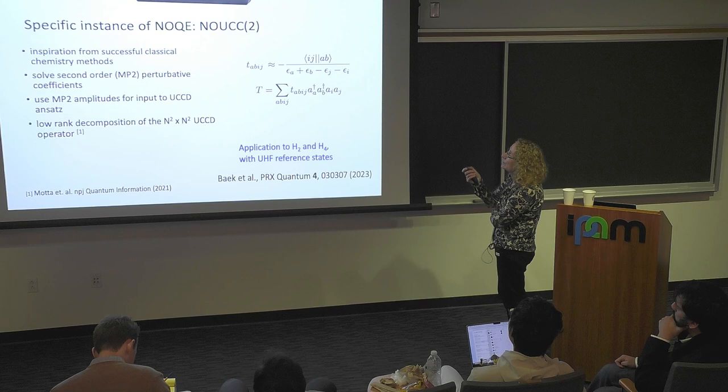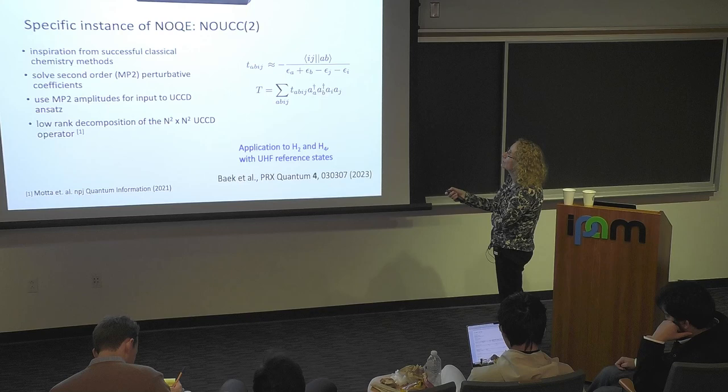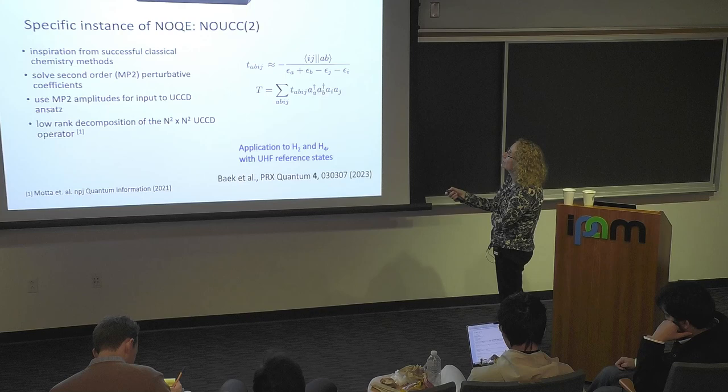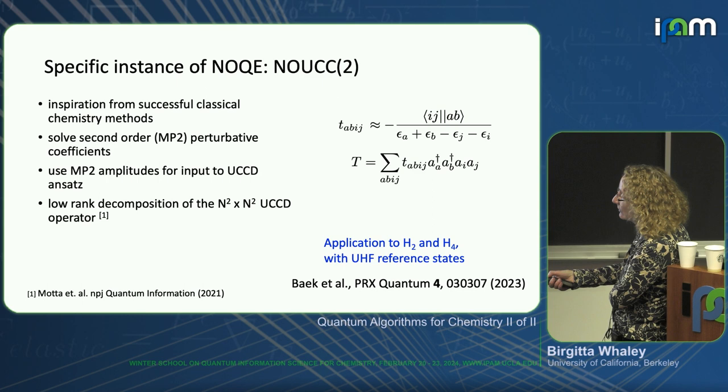Here's a specific example where we input coefficients from a second-order perturbative classical quantum chemistry calculation, with this expression using standard integrals and Hartree-Fock energies. We make a low-rank decomposition of this UCD operator — work due to Mario Motta and co-workers at IBM — and applied this to H2 and H4 with unrestricted Hartree-Fock reference states.